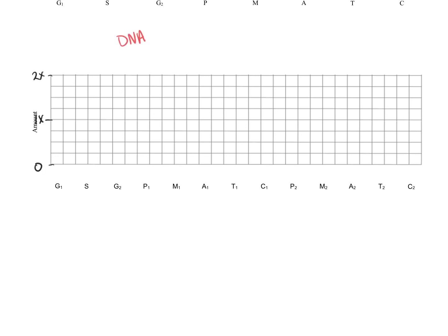So we're going to start at G1 where we're expecting to find the normal amount of DNA. And this DNA is going to get copied during the S phase. So what you would see is a jump in the amount of DNA, it should double.